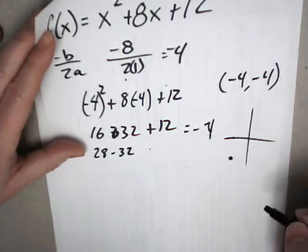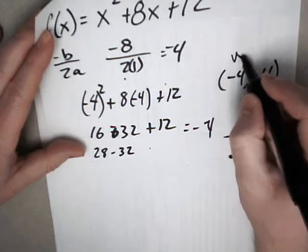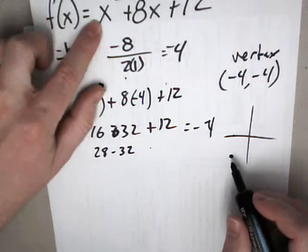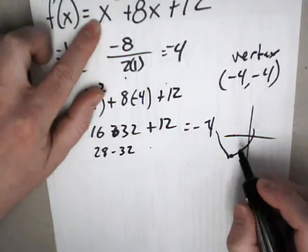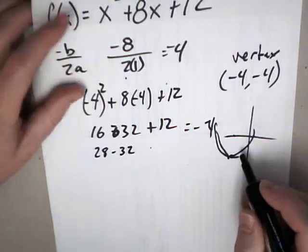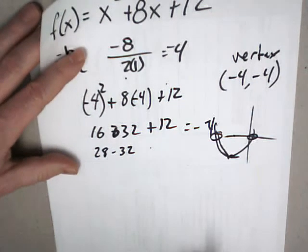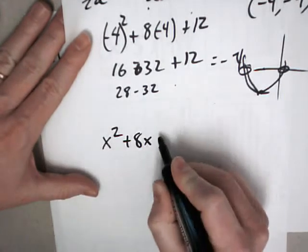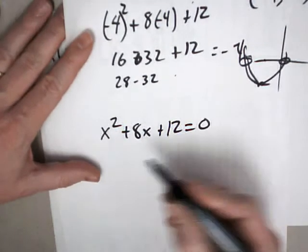So negative 4, negative 4. I graphed it real quick. It's down. Up there would be the vertex. And it's going to open upwards. That's a horrible parabola. Anyways, 2 x-intercepts. So we set this bad boy equal to 0.